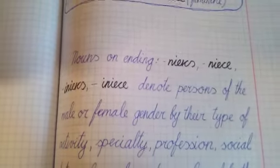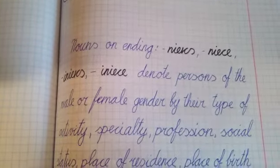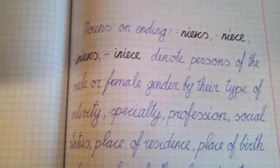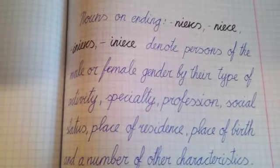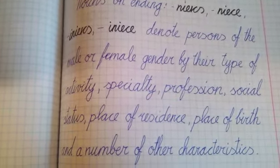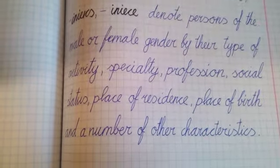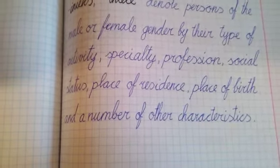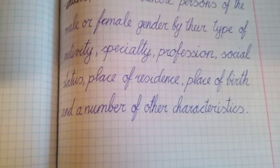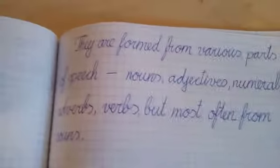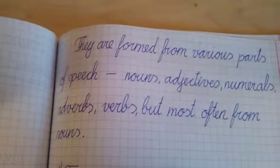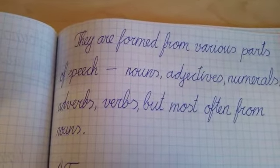Nouns on ending nieks, niece, inieks, iniece denote persons of the male or female gender by their type of activity, specialty, profession, social status, place of residence, place of birth, and a number of other characteristics.